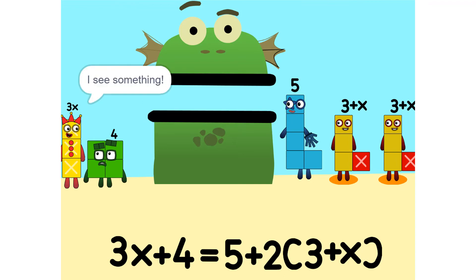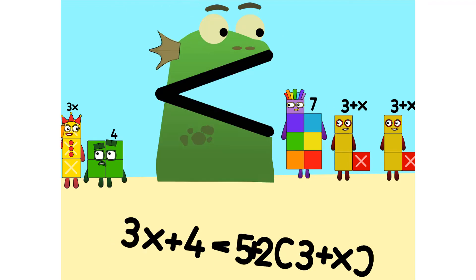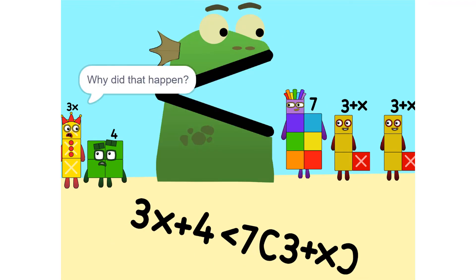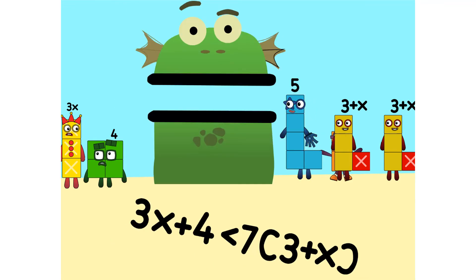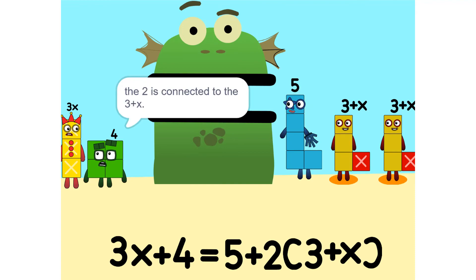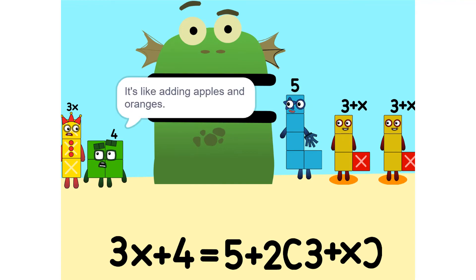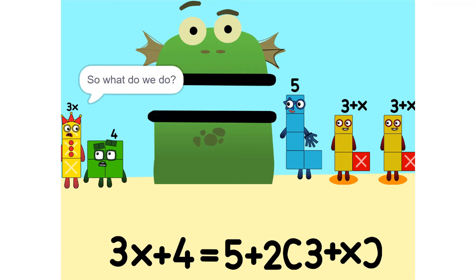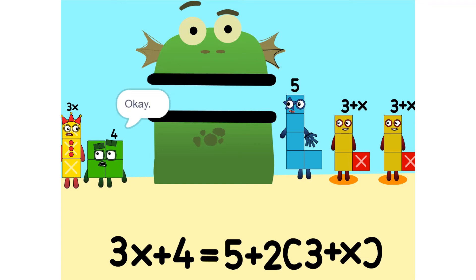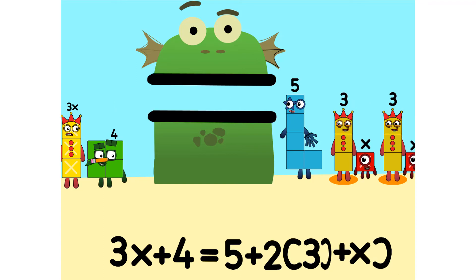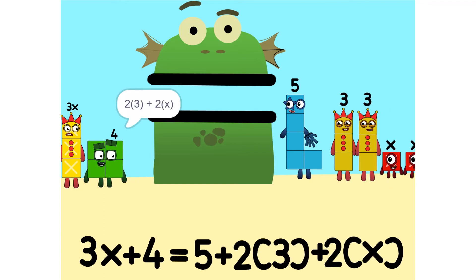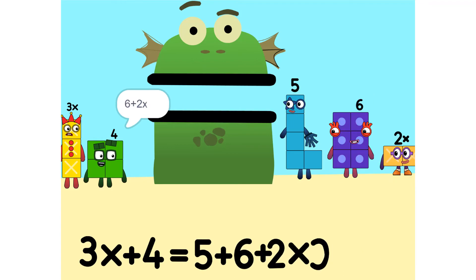I see something. We can add these. Why did that happen? Because the 2 is connected to the 3 plus X — it's like adding apples and oranges. So what do we do? See the 2 times 3 plus X? That's the same as 2 times 3 plus 2 times X, which is 6 plus 2X.